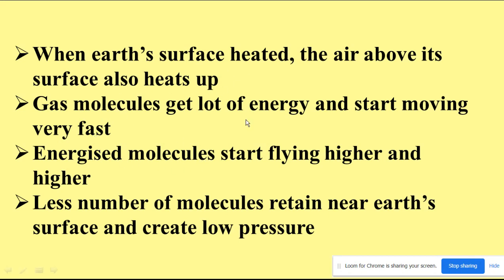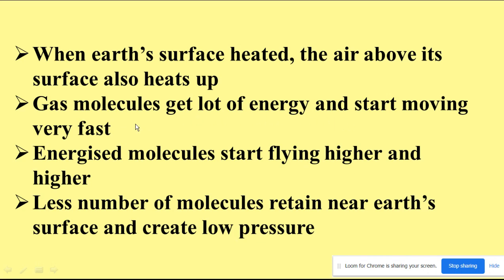Next, how does air move in different directions? When earth's surface is heated, the air above it also heats up. Earth receives solar radiation — a process called insolation. The earth's surface heats up first, and afterwards the air above the earth's surface heats up. When the earth's surface heats up, the gas molecules in the air gain a lot of energy from this heat, and due to that energy, they start moving very fast from one place to another.